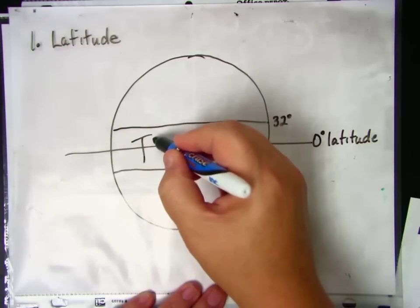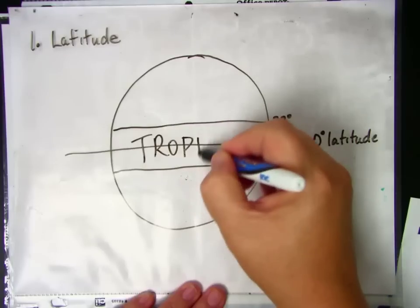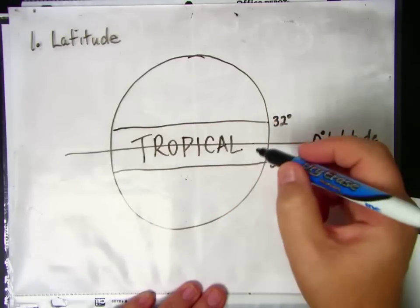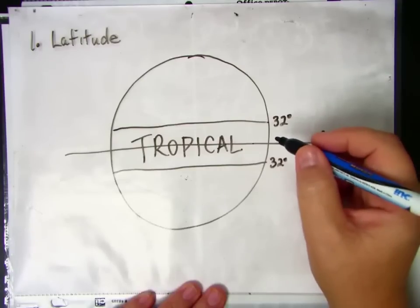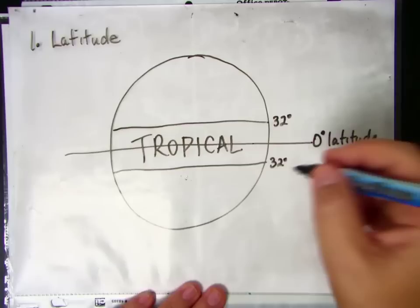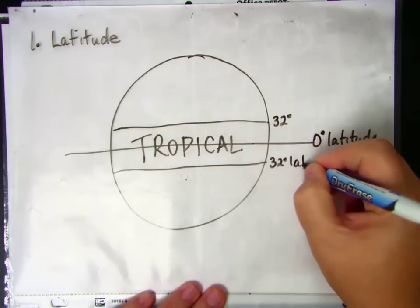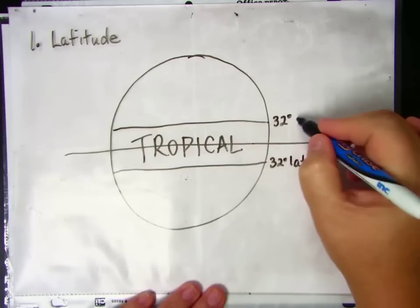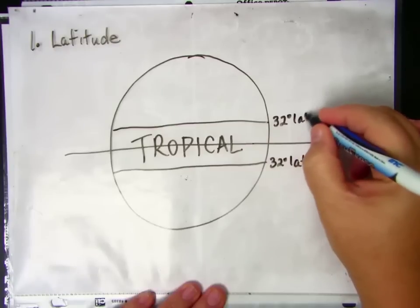And this area in here will always have a warm climate. Many of the places in this tropical zone are near water, so the tropical climate is also a moist climate. So 32 degrees latitude is the border of the tropical climate.